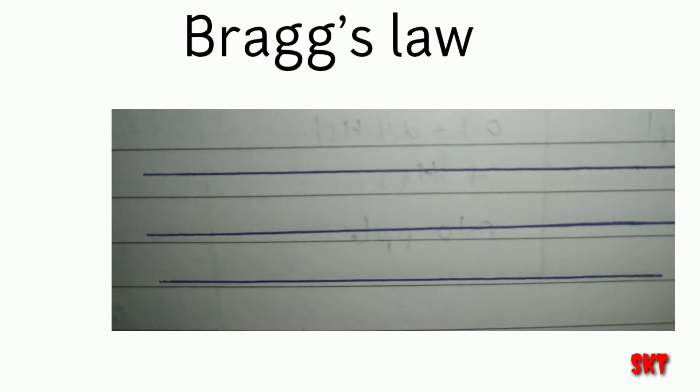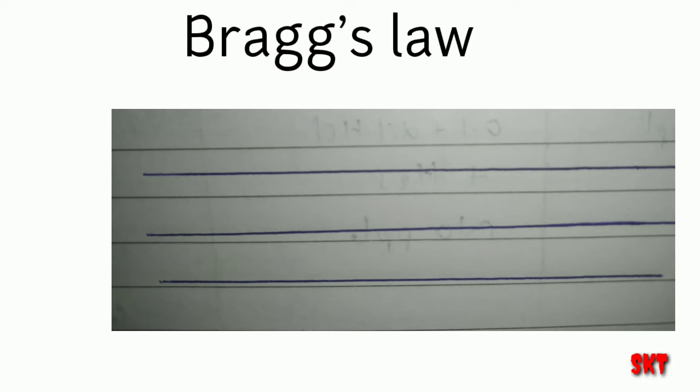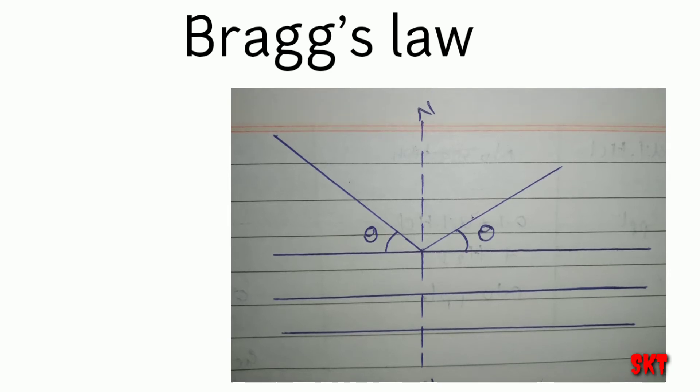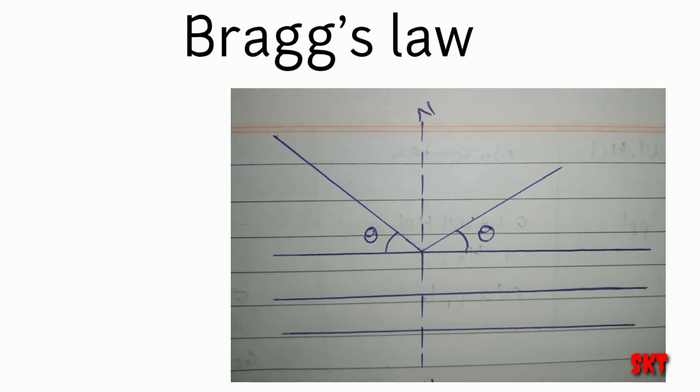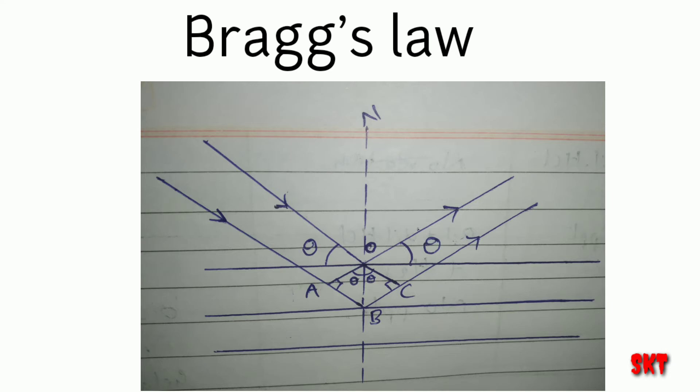let us consider three equidistant planes. Let us pass X-rays which could reflect at an angle theta from these equidistant planes. Now pass another X-ray to the next equidistant plane at an angle of incidence as theta and the angle of refraction would also be theta as shown in the figure. Now draw perpendiculars from O to A and O to C such that the angle AOB and angle BOC must be 90 degrees.